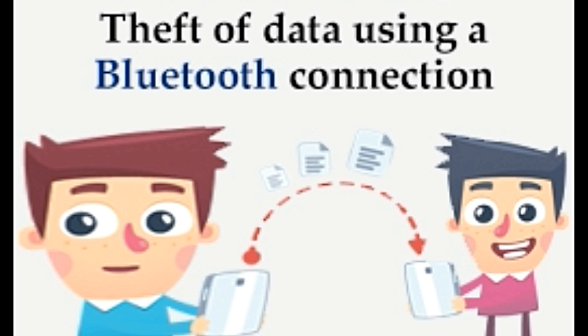This is an accurate example illustrating Bluesnarfing. Scenario: A person is traveling in a bus. He has unknowingly left the Bluetooth on and in the discoverable mode. Another person — the perpetrator — sitting on the next seat pairs up to the victim's phone in an unauthentic manner and downloads all the images. The perpetrator then circulates these images over a social media website. This is another situation of Bluesnarfing.